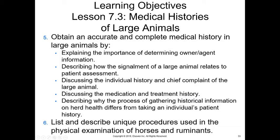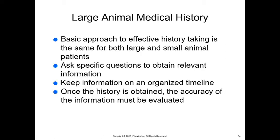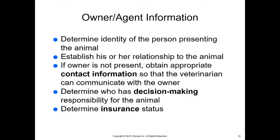We're going to move on to getting medical histories and doing large animals. It's very much the same as doing for small animals, but we're going to cover some of the differences. We're going to ask specific questions to obtain the relevant information, keep information on an organized timeline, and once you have the history, make sure that you have accuracy of that information.